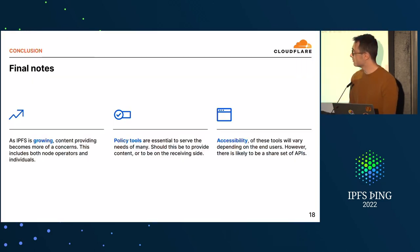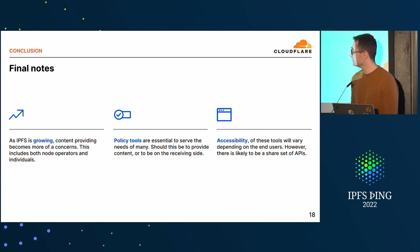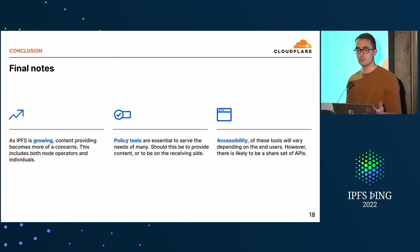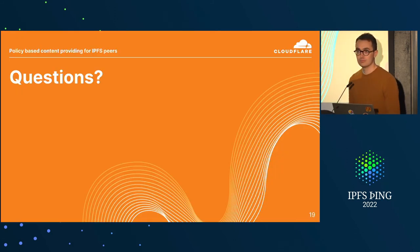In conclusion, about serving what you care about: there's growth in IPFS and in content providing, and both node operators and individuals should have tools to better define what content is being served, what is being stored, who you want to provide to, and who you want to interact with. Policy tools are essential to satisfy those needs. They should work both for the content you provide and the content you receive. The interface will look very different depending on whether you're a web browser user or a node operator with very different needs, but the base primitives and API would share a common set.